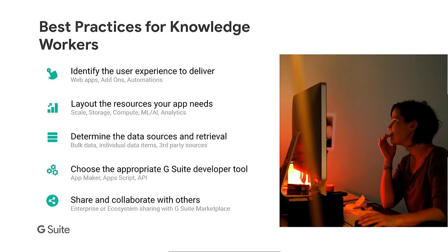The second step is to lay out the resources your application needs — certain compute resources, storage resources, or access to resources such as ML models. Depending on the resources you need, you can think about what kind of platform to build your application on. The third is the data sources and retrieval. Data sources could be an on-prem system you're already using, third-party SaaS services, a few data items accessed via APIs, or a large amount of data that needs to be analyzed using query and analytics tools.